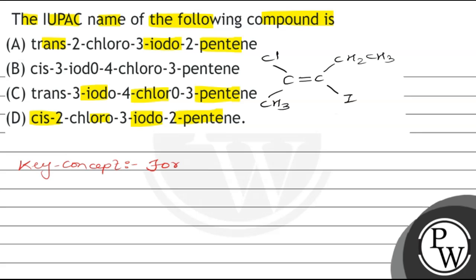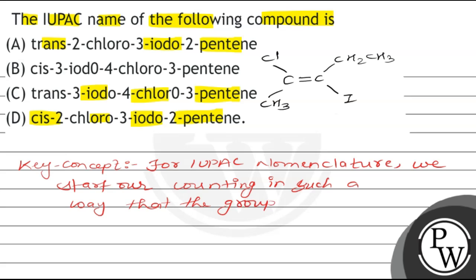What IUPAC nomenclature? We start our counting in such a way that the group having highest priority gets the least count position.